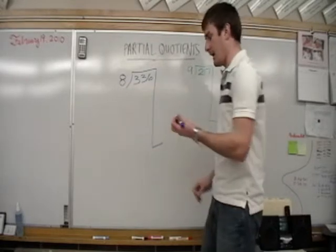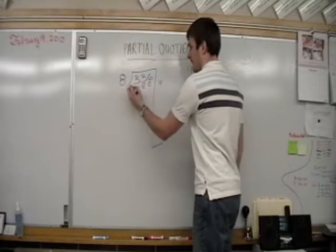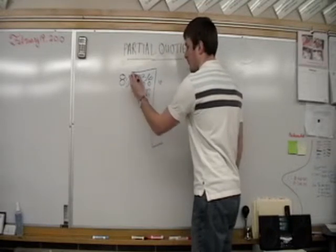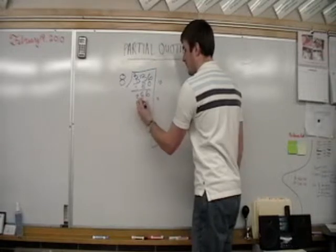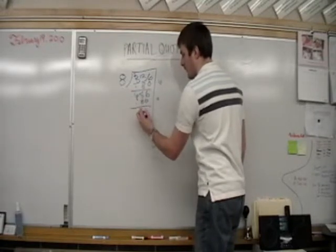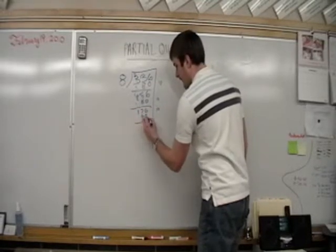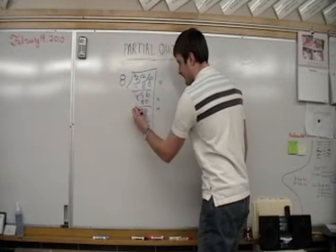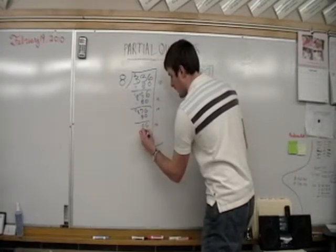336 divided by 8, so we'll do our 10's here and we have 80 and we subtract all the way across. We'll do 10 more which is another 80. Again you'll start to notice this is getting repetitive. Again we'll get 10 which is 80 again, and 10 more again 80.